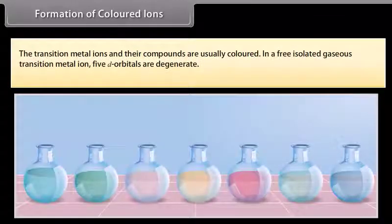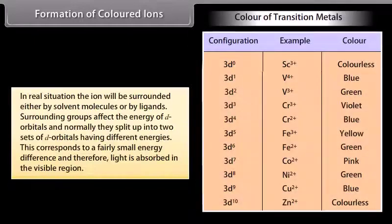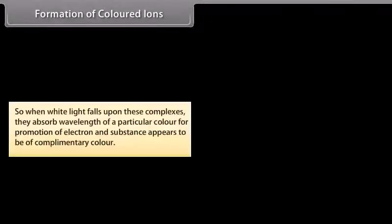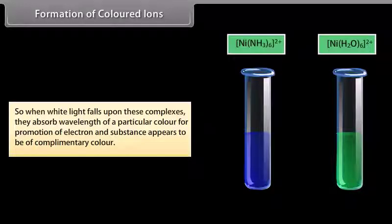The transition metal ions and their compounds are usually colored. In a free isolated gaseous transition metal ion, the 5 D-orbitals are degenerate. However, when surrounded by solvent molecules or ligands, the D-orbitals split into two sets of different energies. This energy difference corresponds to the visible region of light. When white light falls on these complexes, they absorb a particular wavelength for electron promotion, and the substance appears to be of the complementary color.